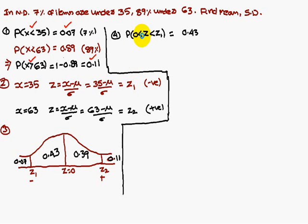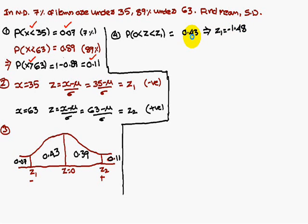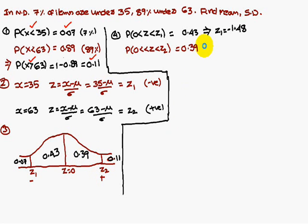Write the areas in mathematical notation. From z = 0 to z = z1, the area is 0.43, which implies z1 = −1.48. You can get this value from the normal distribution tables. Similarly, from z = 0 to z = z2, the area is 0.39, which implies z2 = 1.23. This value is also obtained from the normal distribution tables.